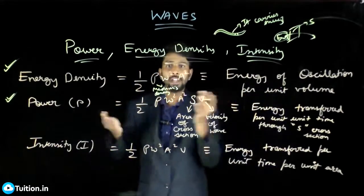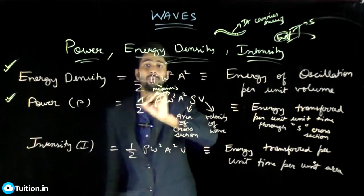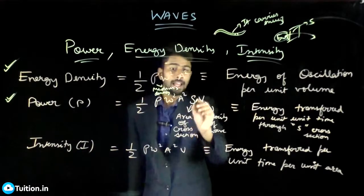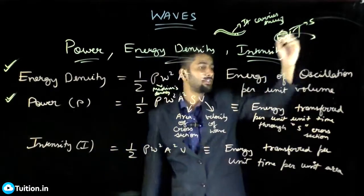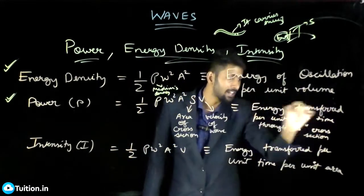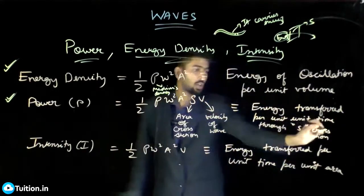It is a density of medium in which this wave is traveling. Omega square a square you already know. S is the cross sectional area, like for which I want energy transferred per unit time. It is basically power transferred - energy transfer per unit time is power transferred through S cross sectional area.